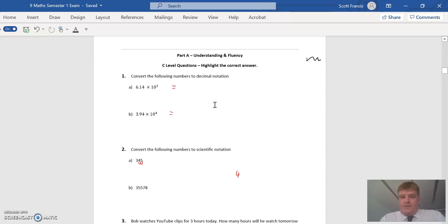The first thing we've got to do here is convert some numbers to decimal notation. So 6.14 by 10 to the 2. You can think of this two ways: we've got to move the decimal place two places, which would be 614, or we can say 6.14 times 10 to the 2 is 100, so 6.14 times 100 is 614.